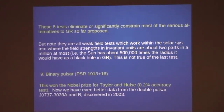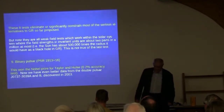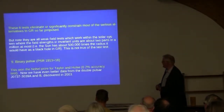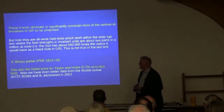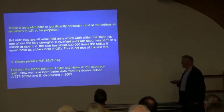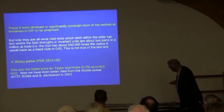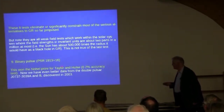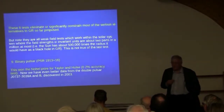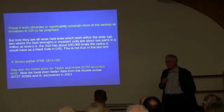These eight tests eliminate almost everything that's been proposed as an alternative, but they're all very weak field tests. In a meaningful way, you can say that the field strength of the sun is about two parts in a million, on the grounds that it has about 1,500,000th times the radius it would have if the same mass were a black hole. That's not true of the last test, which won the Nobel Prize in 1994. We now have better data than the Nobel Prize winning data from the double pulsar; the original result was done using the binary pulsar, one of whose elements was found to be a pulsar.